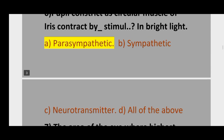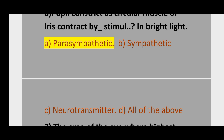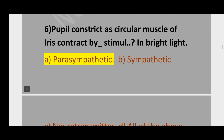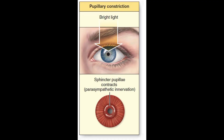Question number 6. Pupil constriction: option A, parasympathetic; option B, sympathetic; option C, neurotransmitter; option D, all of the above. The correct option is option A, parasympathetic.